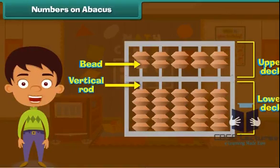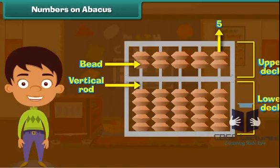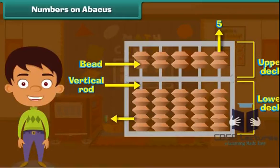Every vertical rod in the upper deck has two beads, each bead worth the value five. Each vertical rod in the lower deck has five beads, each worth the value one.